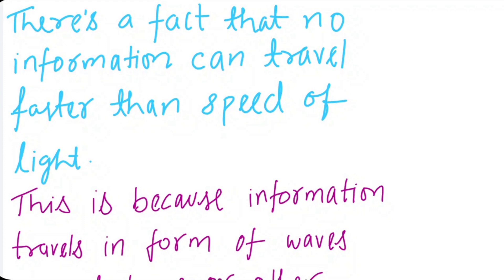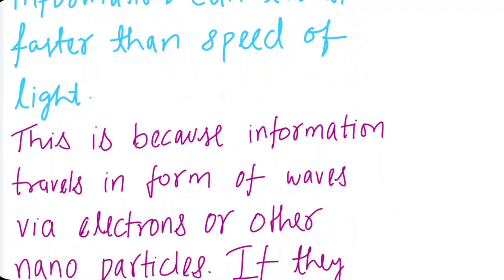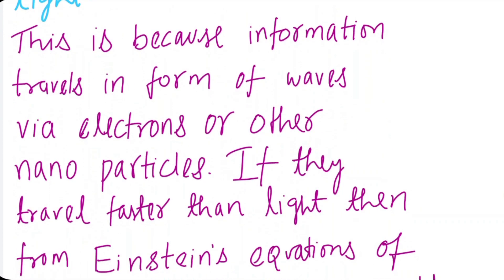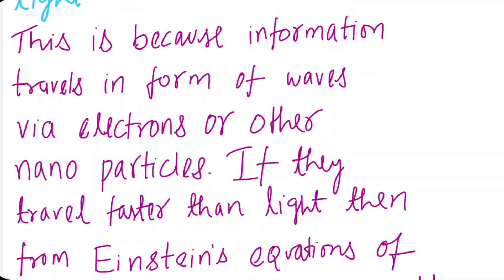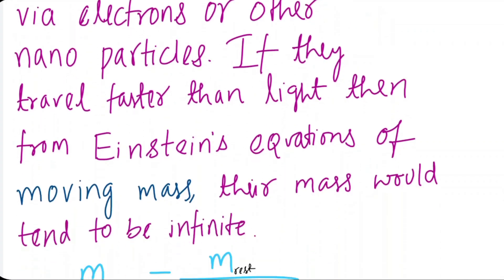There's a fact that no information can travel faster than speed of light. This is because information travels in form of waves via electrons or other nanoparticles. Anyway, that may be a topic for another video, but here's a short proof.